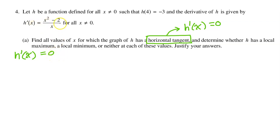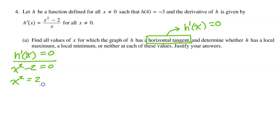A fraction will only equal 0 when the numerator is equal to 0. So let's set x squared minus 2 equal to 0. Adding 2 to both sides, we get x squared is equal to 2. Taking the square root of both sides, we get x is equal to plus or minus the square root of 2. These are the x values for which h has a horizontal tangent line.